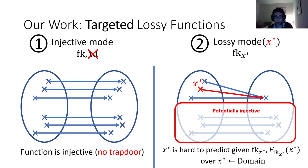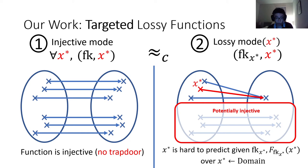The main conceptual difference with lossy trapdoor functions is that in lossy mode, the constraint may only apply over a very small set of input points. So it is possible that the targeted lossy function has almost all of its domain be injective except for a very small set defined with respect to X star. Last, we also strengthen the computational indistinguishability of the modes by requiring that function keys — either generated in injective mode or targeted lossy mode — should be indistinguishable even given the target.